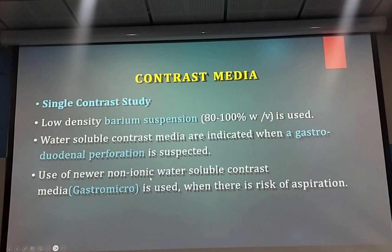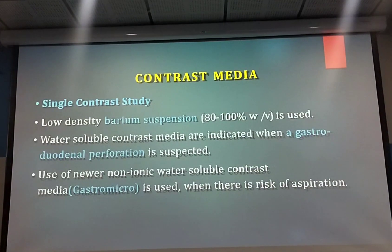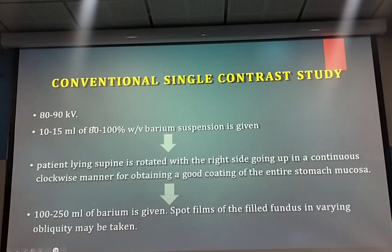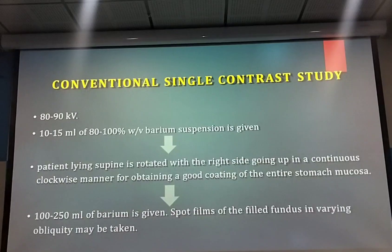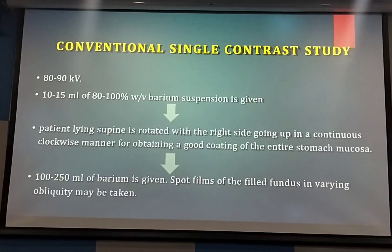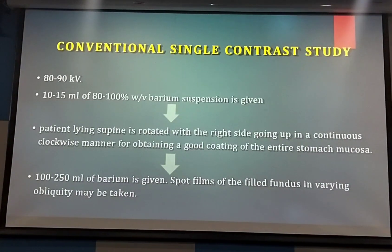Gastrografin is an ideal water-soluble contrast indicated in cases of perforation. In a suspected case of perforation, we will not give barium — we give water-soluble contrast, Gastrografin. The technique uses 80-90 kV, 10 mA contrast. The patient lies supine and we rotate the patient clockwise. First we give contrast, it will fill the stomach, then clockwise rotation allows entire coating of the stomach. The pylorus will open and return anti-clockwise, then the pylorus will lead into the duodenum.